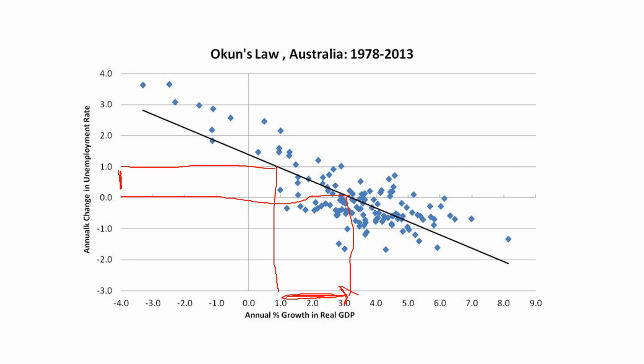When GDP goes up, you will see that our unemployment rate falls. GDP change is 2 units, and unemployment rate change is 1 unit. That ends our lesson for Okun's Law. Thank you all for listening.